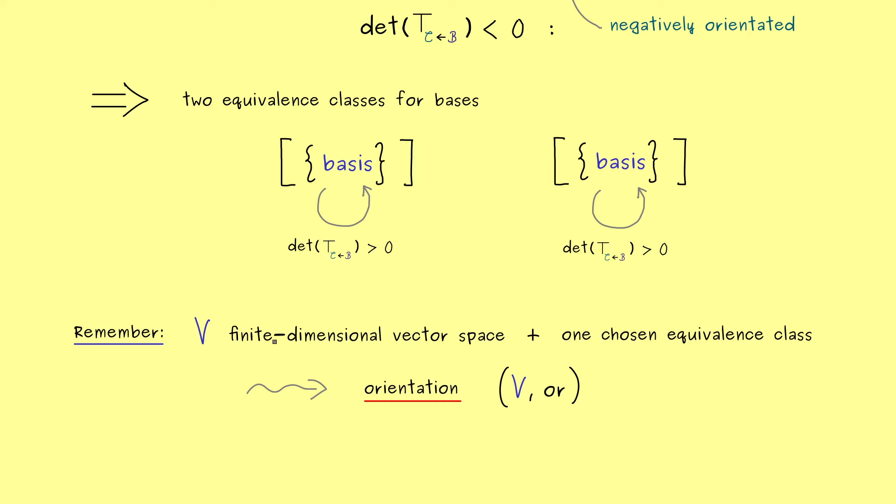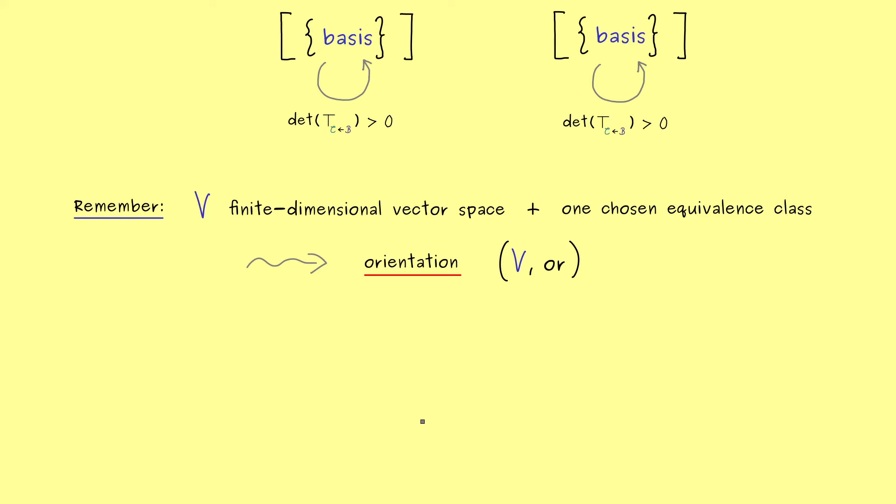After this linear algebra excursion, we're ready to apply this to manifolds. We want to orient manifolds, not just vector spaces. However, it turns out we cannot do that in general. There are manifolds where orientation does not make sense. Let's first look at a good example: the torus. This is a two-dimensional manifold we can embed into R^3. For every point on the manifold, we find a two-dimensional tangent space. This tangent space is a finite-dimensional vector space and can have an orientation.